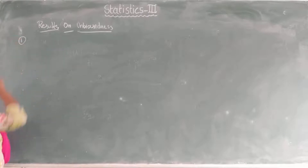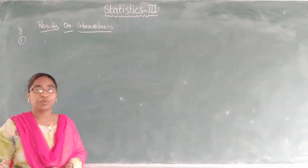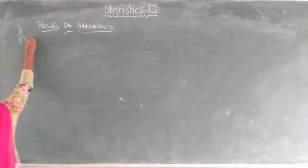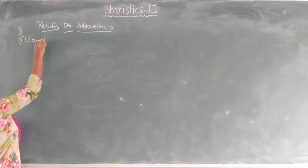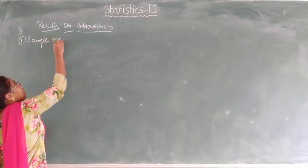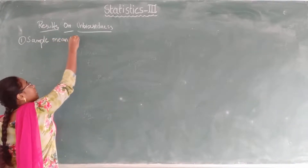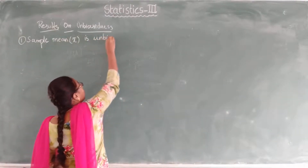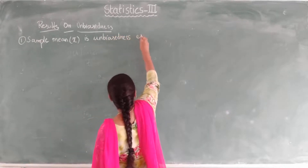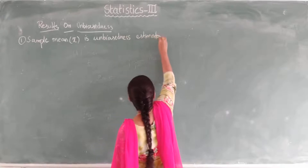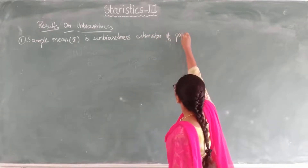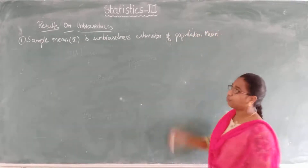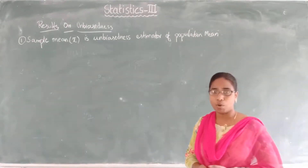The first result we are going to prove is that the sample mean is an unbiased estimator of the population mean. For any distribution or any population, the sample mean — denoted with x̄ — is an unbiased estimator of the population mean.